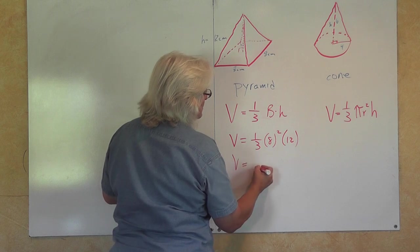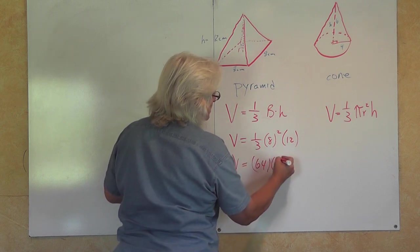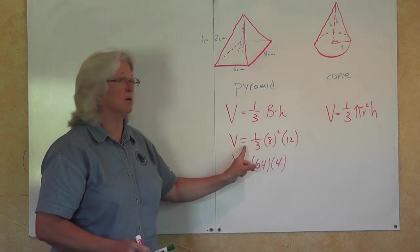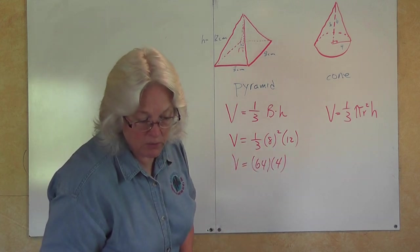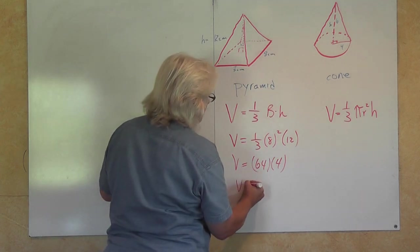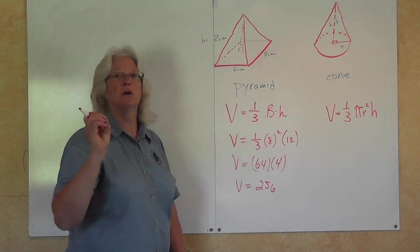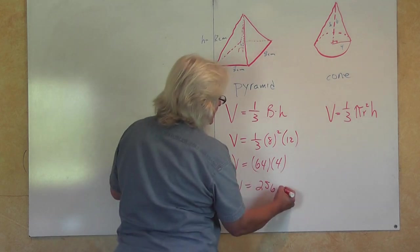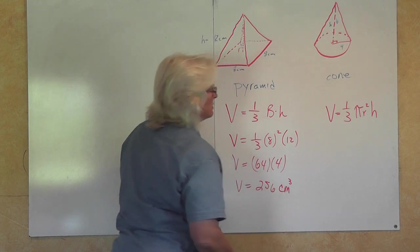So the volume is equal to 64 times 4. 8 times 8 is 64, one-third of 12 is 4. When you do that multiplication, we have a volume of 256 cubic units. Our units here are centimeters, so we have 256 cubic centimeters.